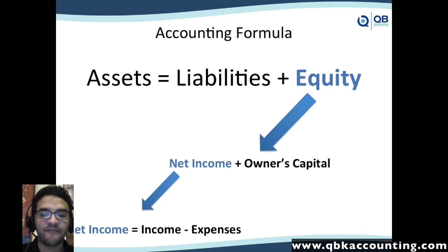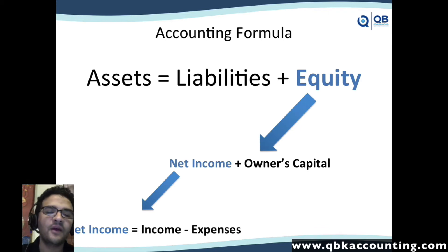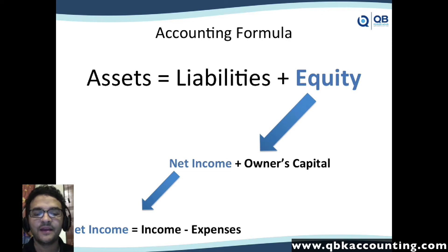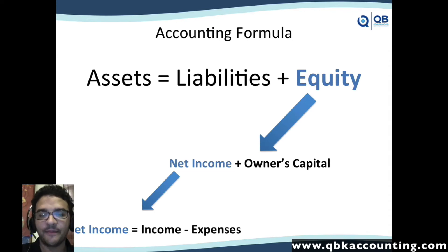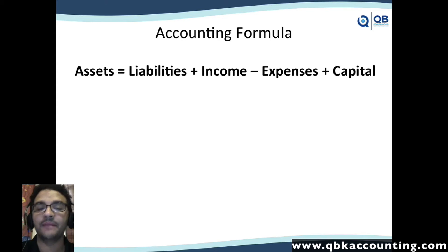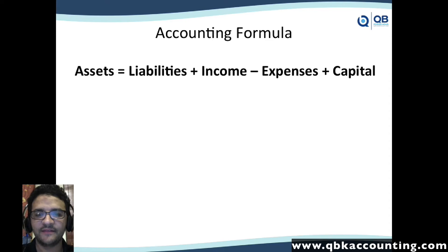To break it down even further — what is net income? Net income is the same thing as retained earnings. Net income is income minus expenses, or sales minus expenses. If you were to break down this formula even more, it would be: assets equals liabilities plus income minus expenses plus owner's capital. Because income minus expenses is the same thing as net income or retained earnings.